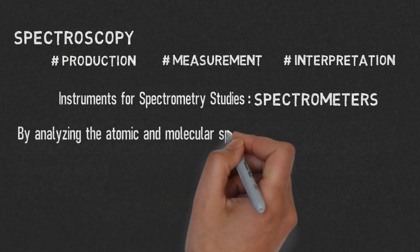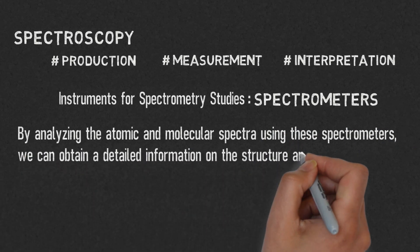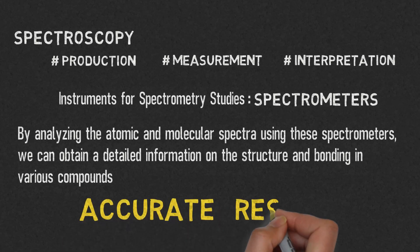By analyzing the atomic and molecular spectra using these spectrometers, we can obtain detailed information on the structure and bonding in various compounds. The best part is, the results are very accurate.